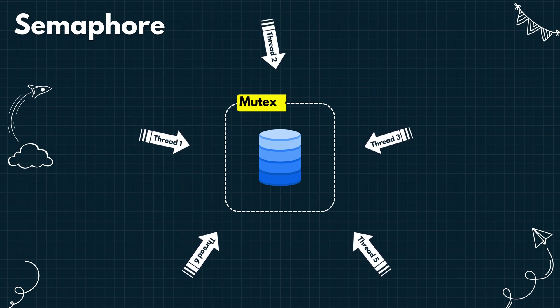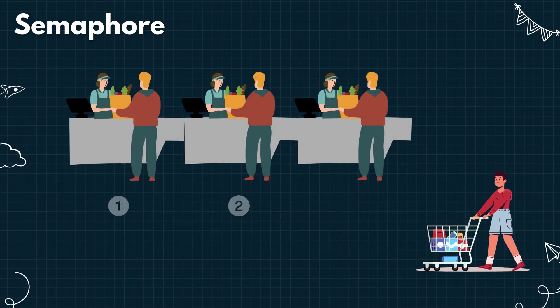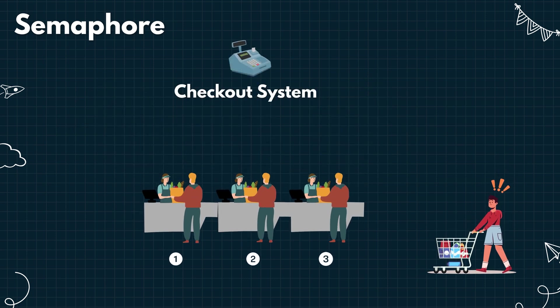Imagine you go to a supermarket and buy some groceries. There are three checkout counters. Once three people occupy the counters, the fourth person has to wait. Here the grocery market's checkout system is a shared resource — a maximum of three people are allowed to use it at the same time. The counter is like a semaphore, which gives access to the system for a maximum of three people at the same time.